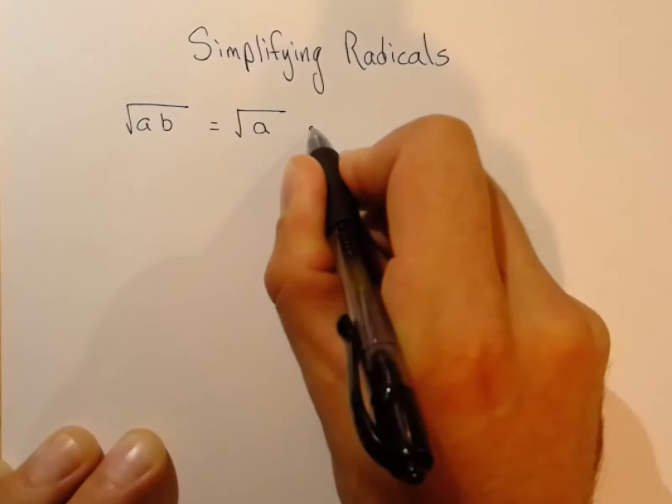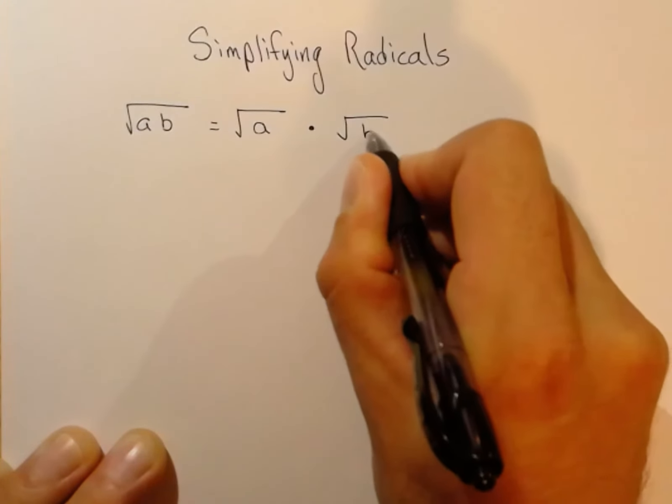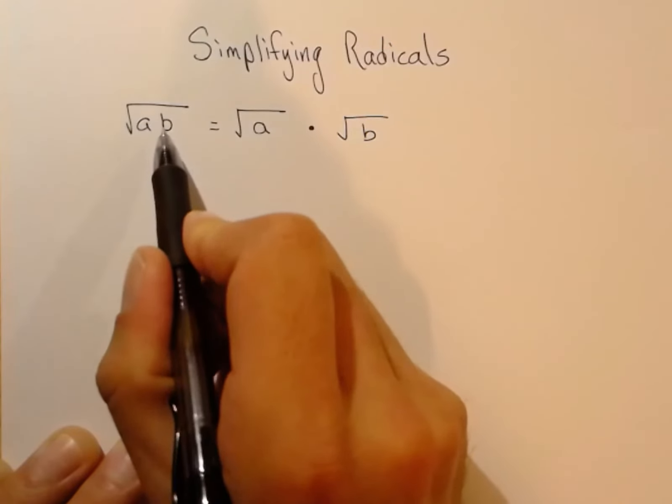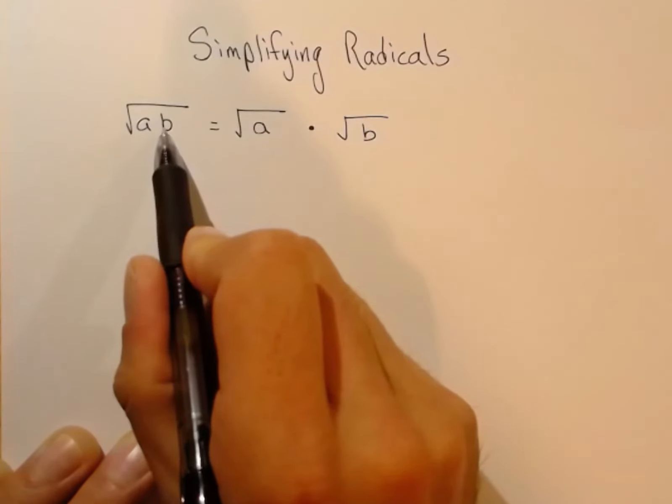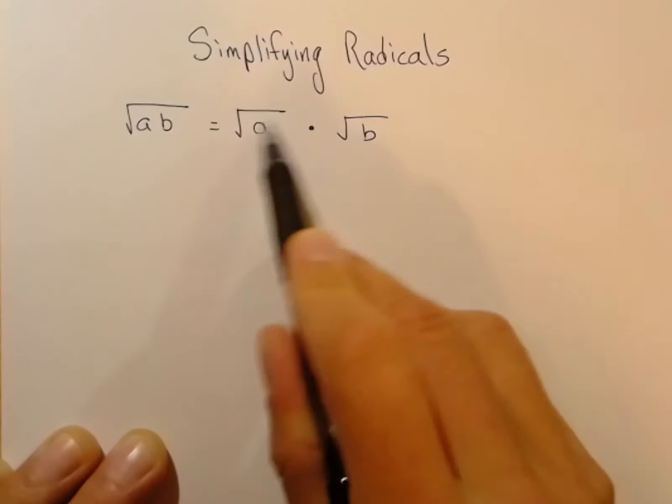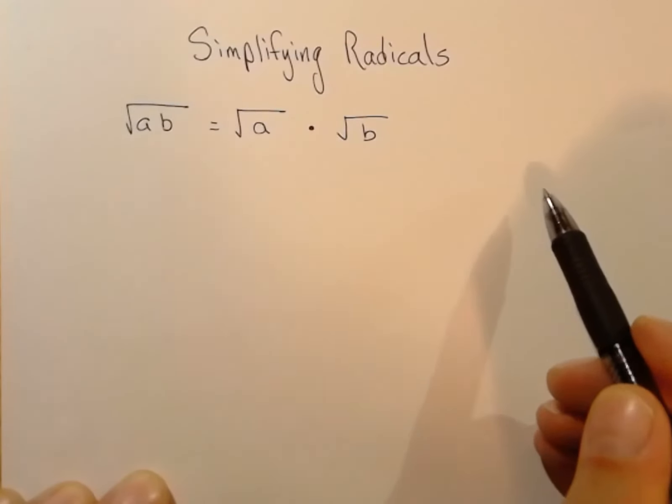If you have a product of two numbers under the radical, you can break that up so that you multiply the radical of each factor.